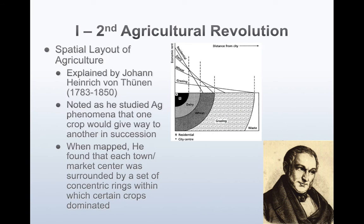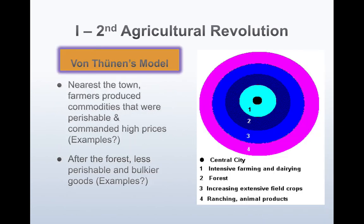The Second Agricultural Revolution brings in this idea of the spatial layout of agriculture. Johann Heinrich von Thünen is the first person who came up with this — you need to know that name. He studied agricultural phenomena and found that as he traveled further outside of the city, one crop would give way to another in succession. There was no difference in the land itself — it was purely the distance from the central city. When he mapped it, he found that each town was surrounded by a set of concentric rings in which certain crops dominated. His model is very important and is similar to the concentric zone model from urbanization.